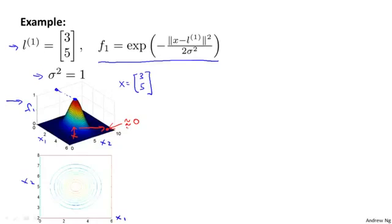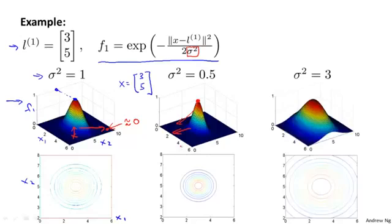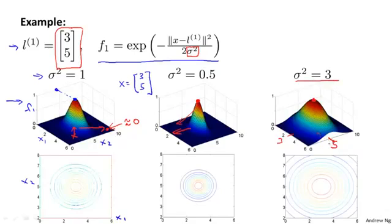Now I want to show the effects of varying the parameter sigma squared. Sigma squared is a parameter of the Gaussian kernel, and as you vary it you get slightly different effects. If we set sigma squared to 0.5, the kernel looks similar but the width of the bump becomes narrower and the contours shrink. So as you move away from x equals (3, 5), f one falls to zero much more rapidly. Conversely, if you increase sigma squared — say sigma squared equals 3 — then as you move away from L1, the value of the feature falls away much more slowly.